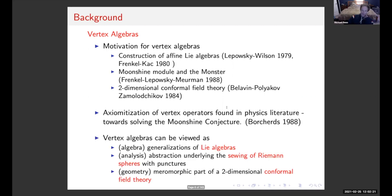The axiomatization of vertex operators in the physics literature led to the definition of a vertex algebra by Borcherds around 1988, which earned him the Fields Medal years later for proving the moonshine conjecture. We can view vertex algebras as some generalization of a Lie algebra, and also a simultaneous generalization of a commutative associative algebra, with some analytic notion as the sewing of Riemann spheres, and a geometric notion in terms of the meromorphic part of two-dimensional conformal field theory.